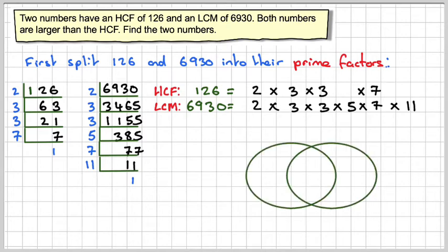Draw your Venn diagram. What's in the middle is the HCF. So in there, we put 2, 3 squared, and 7—that's 2 × 3 × 3, which is 3 squared, times 7. Let's ring those off.